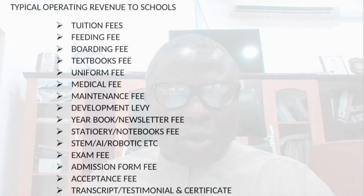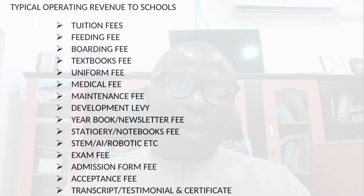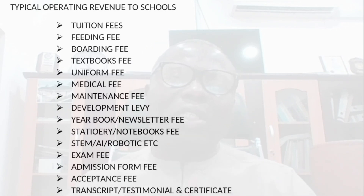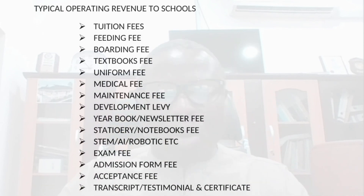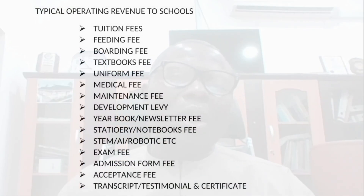We have medical fees, maintenance fees, development levy, and yearbooks and newsletters — all these factor into the fees. And then we have what we call STEM, robotics, or AI fees, which cover computer training and technology, ICT, and so forth. We also charge pupils or students exam fees, which are also factored into the school fees.